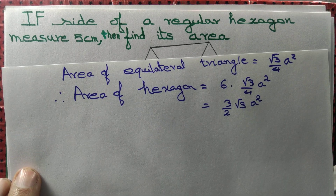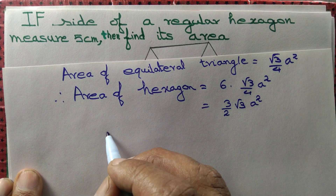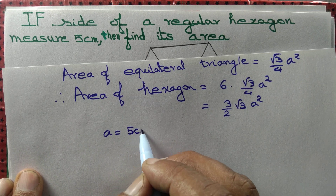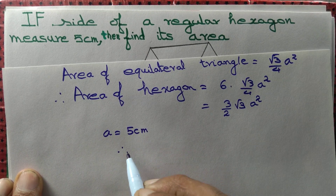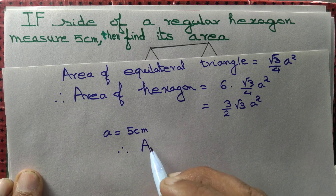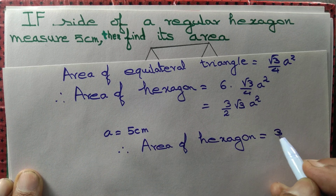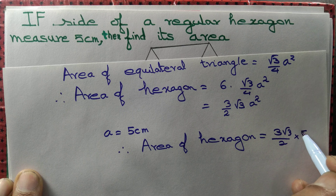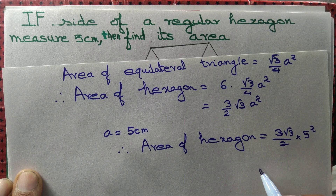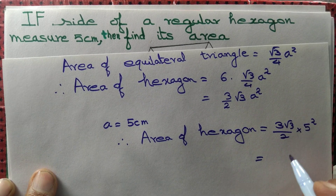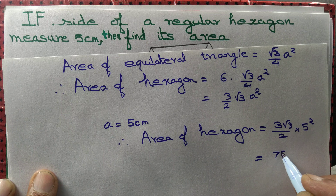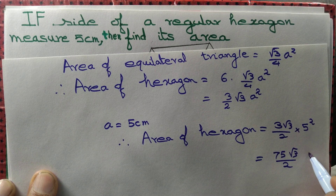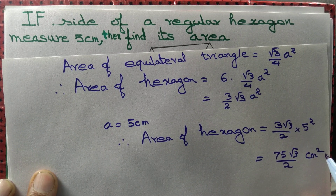In this case, we are given a = 5 cm. Therefore, area of hexagon = 3√3/2 × 5², which equals 75√3/2 cm².